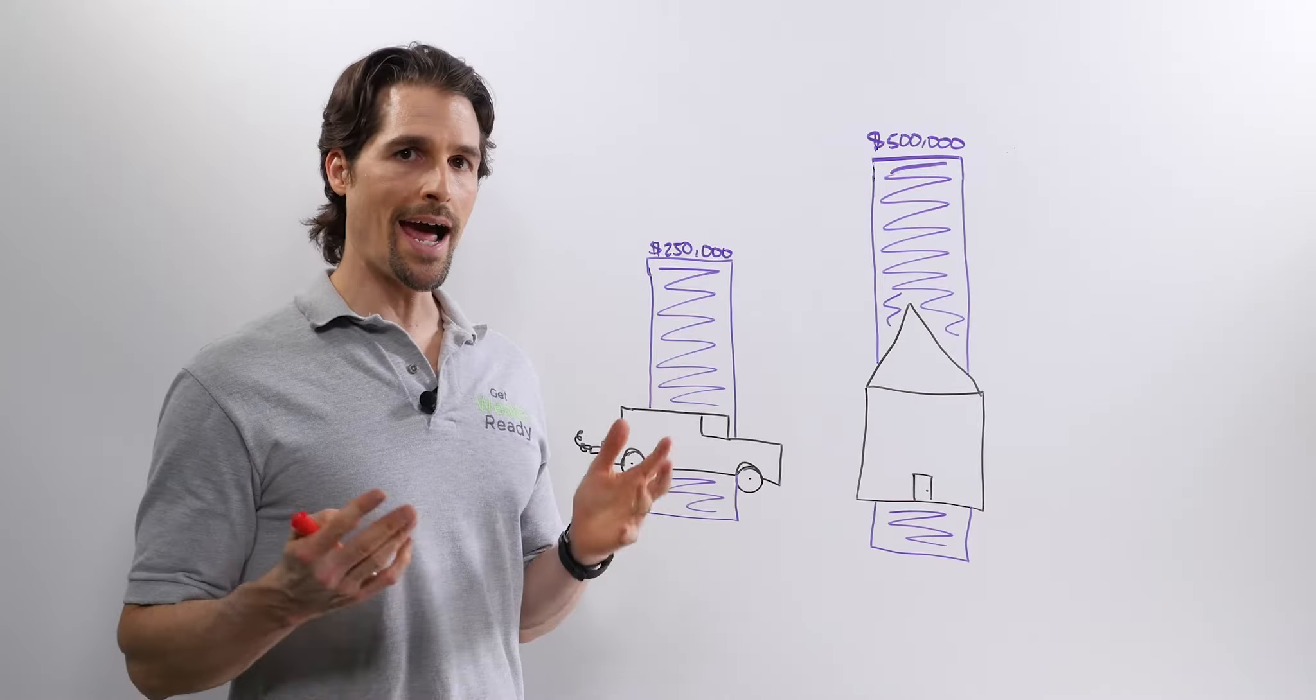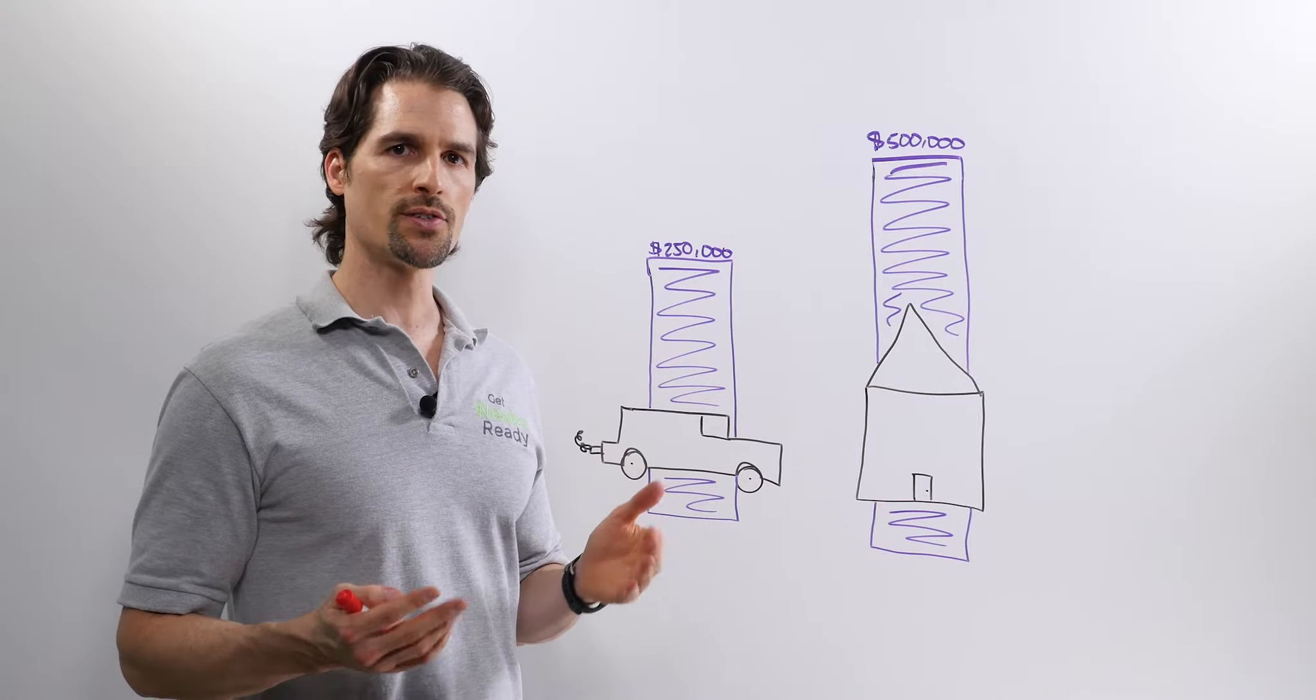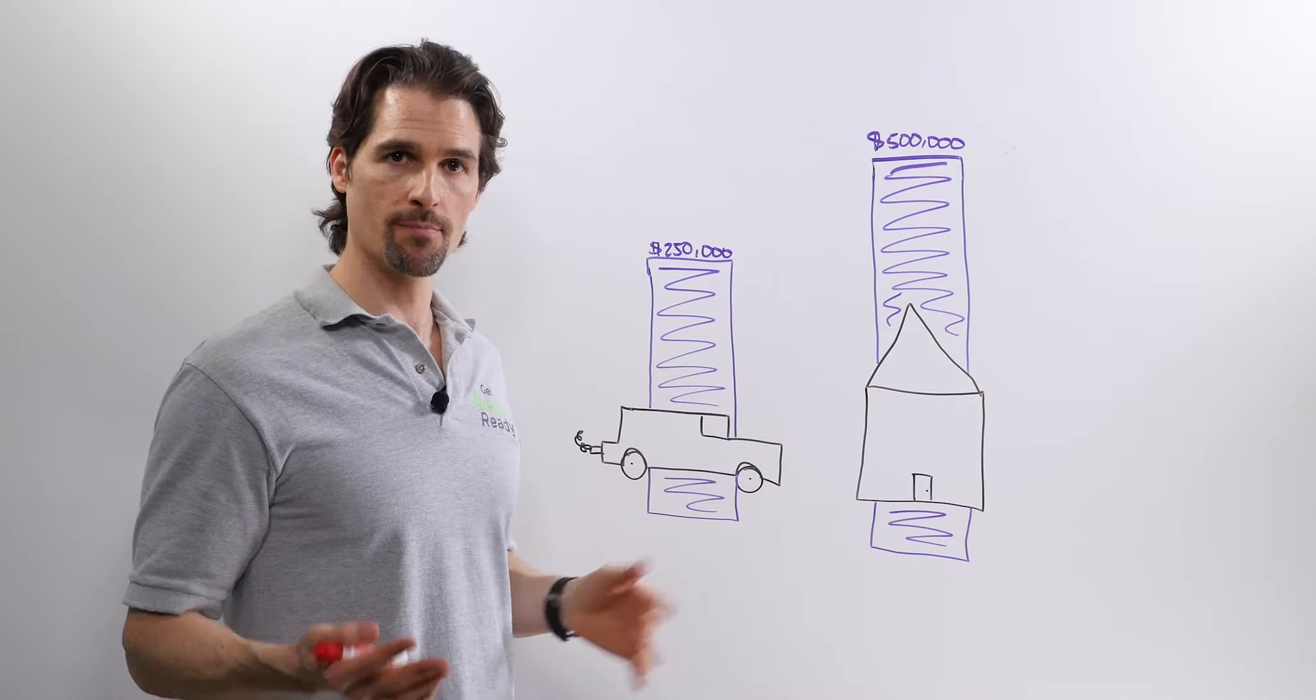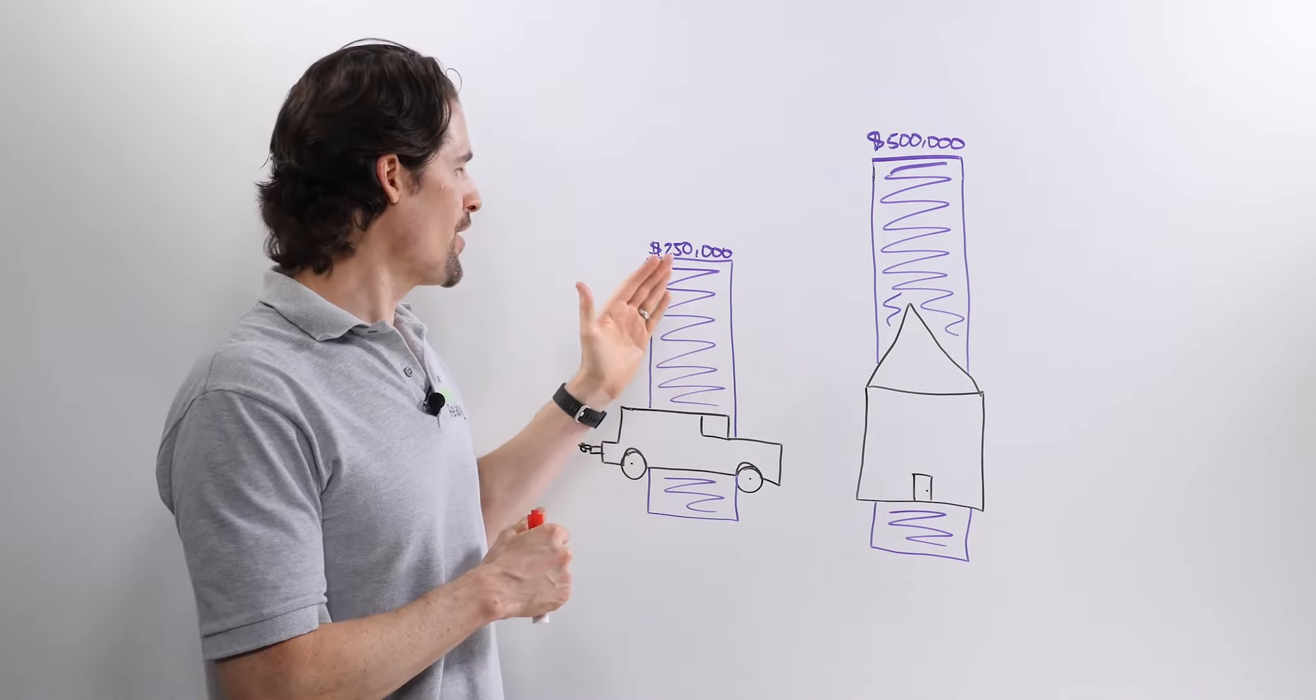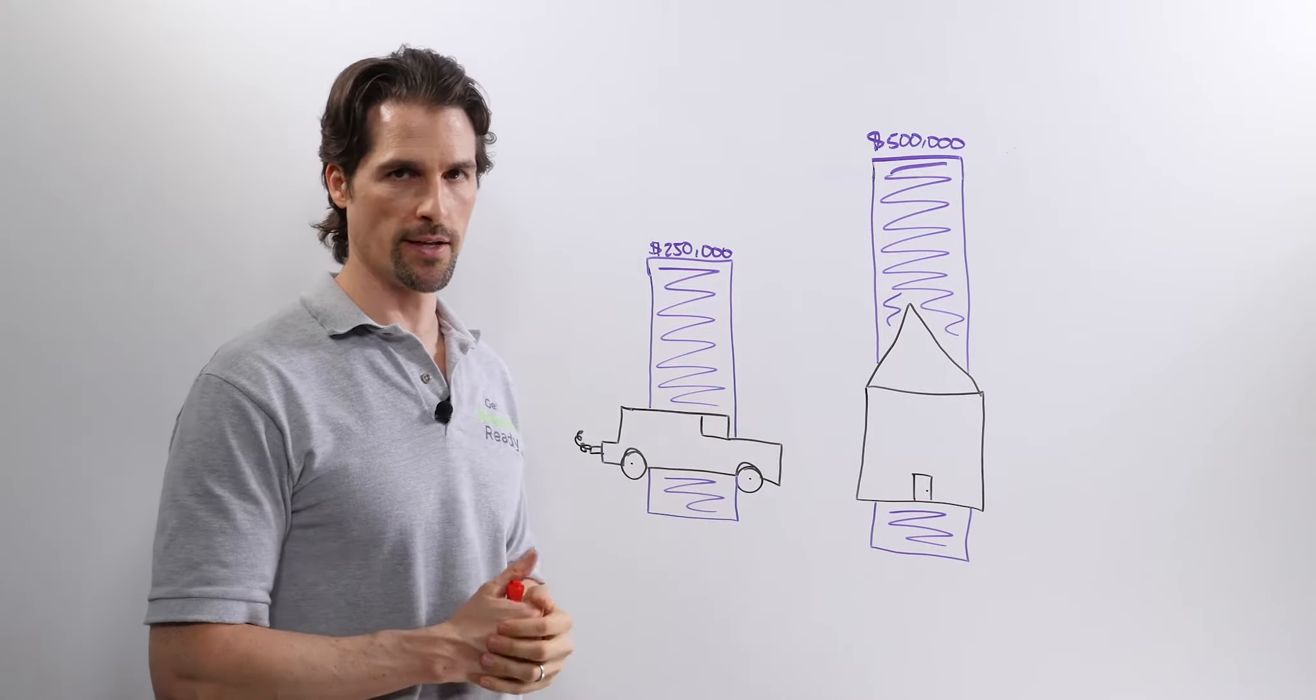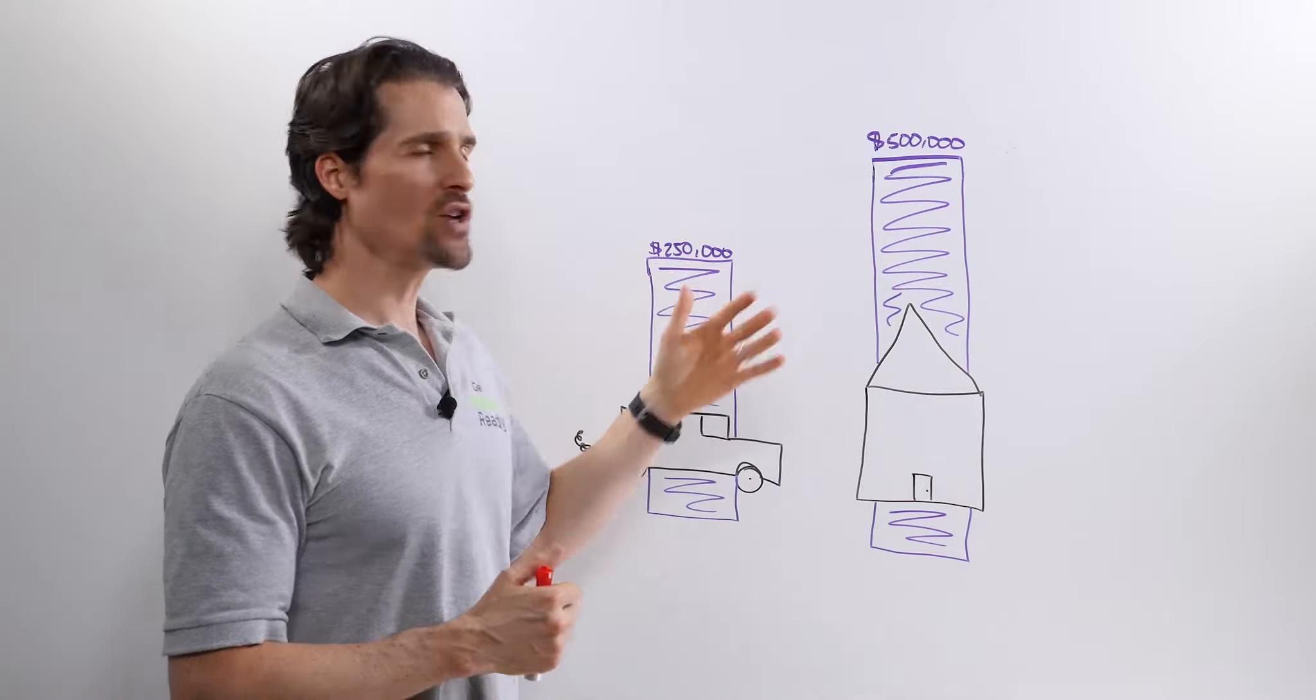So here's how an actual umbrella liability policy works in action. So we already have liability insurance. Congratulations. You have it on your auto policy and you also have it on your homeowner's policy, but they each have limits.